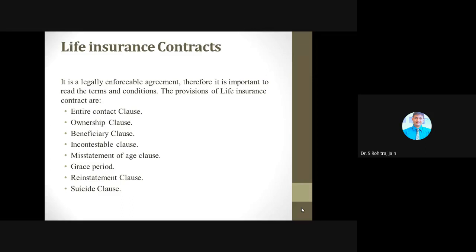The second provision is the ownership clause. In life insurance, the provision or endorsement designates the owner of the policy when such owner is someone other than the insured — for example, a beneficiary. An ownership clause in a life insurance contract provides ownership of the contract to the policyholder. That is when they decide who the beneficiaries will be and how much death benefit they will receive when the insured person dies.